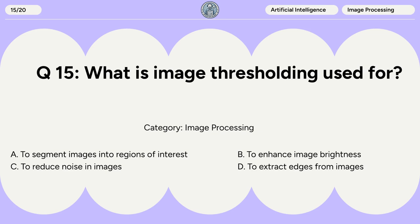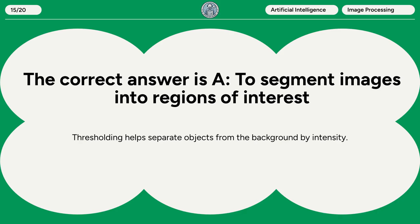Question 15. What is image thresholding used for? A. To segment images into regions of interest. B. To enhance image brightness. C. To reduce noise in images. D. To extract edges from images. The correct answer is A: to segment images into regions of interest. Thresholding helps separate objects from the background by intensity.